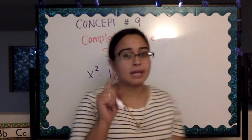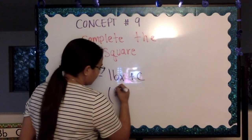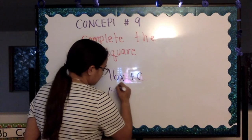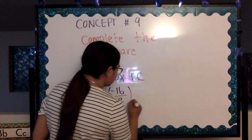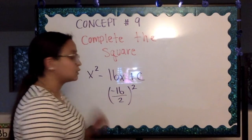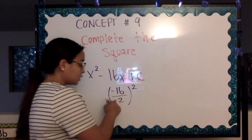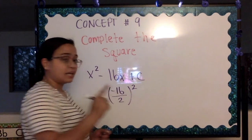So remember that little formula I gave you where we put b, which in this case is negative 16, divided by 2 squared. That is going to give us the value of c. So 2 goes into 16 eight times.